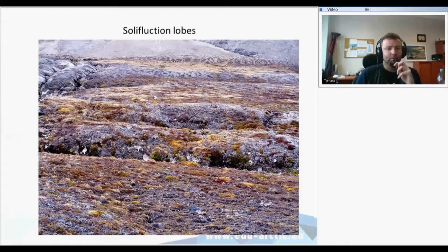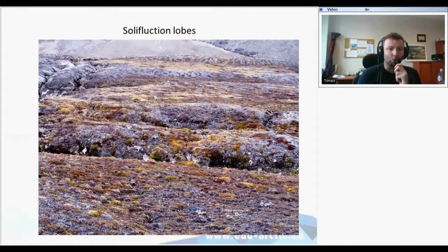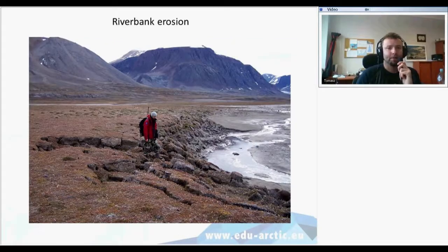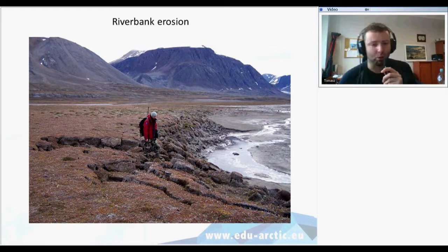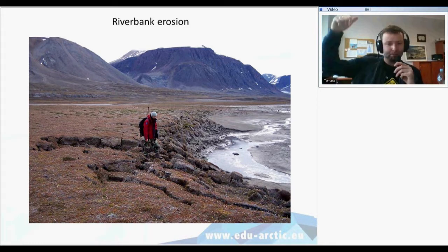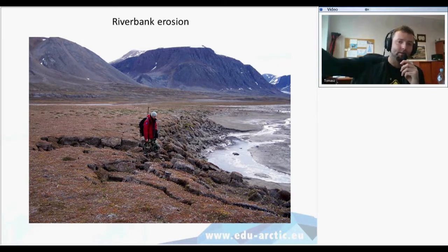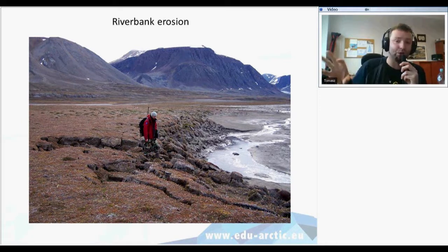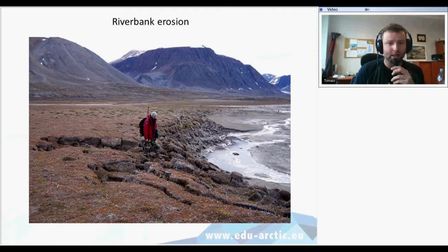Other forms connected with periglacial processes are solifluxion lobes. If the ground is thawing during summer, the ground can creep slowly, and you can see lobes on the ground. There is also riverbank erosion: if there is frozen ground beneath the surface but it meets water from a river, there is erosion of frozen ground by the river, and you can see blocks of previously frozen ground released by river erosion.